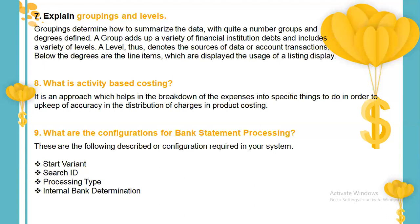What is activity-based costing? This is basically a variant of costing in which you are able to break down expenses into very specific sectors — the activities. For example, if I have sent a team for an outing, a team for an onshore project, and another team working locally, as a financial manager it's my responsibility to track how much finance is flowing into each team and for which purposes. This is all taken care of by activity-based costing.